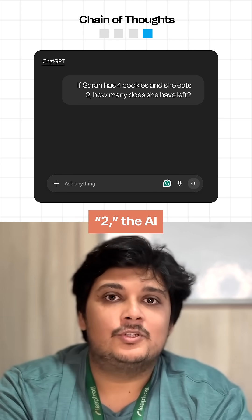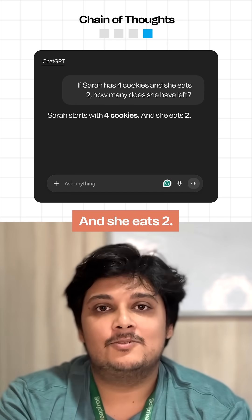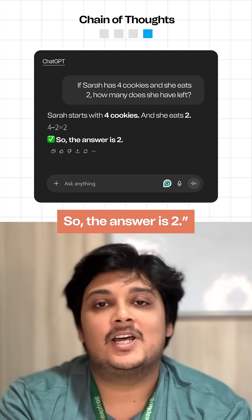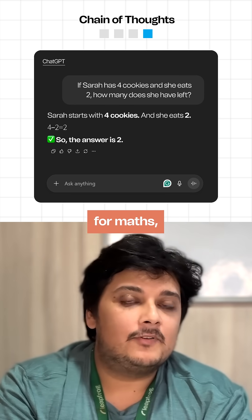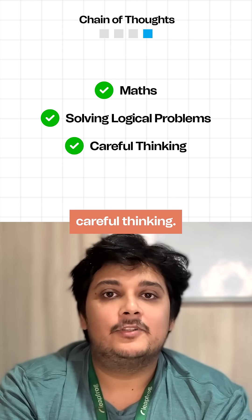Instead of just saying 2, the AI will say, Sara starts with 4 cookies and she eats 2, so 4 minus 2 is 2, so the answer is 2. This is super helpful for maths, solving logical problems, or anything that requires careful thinking.